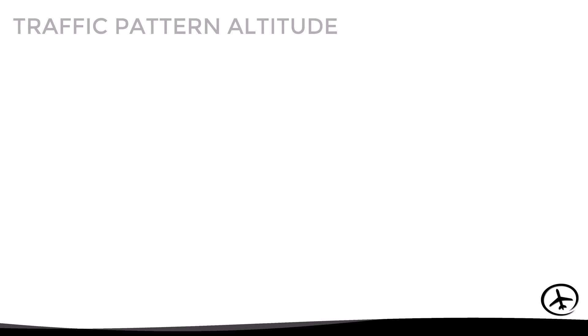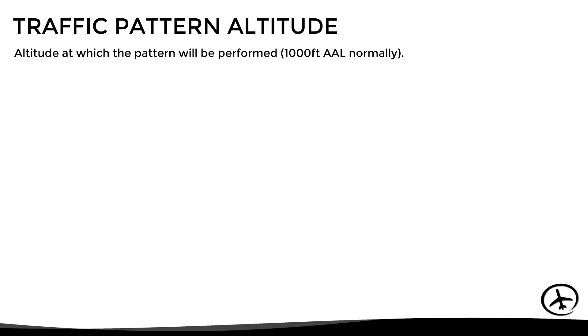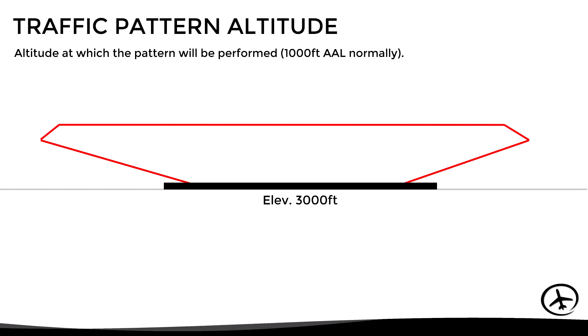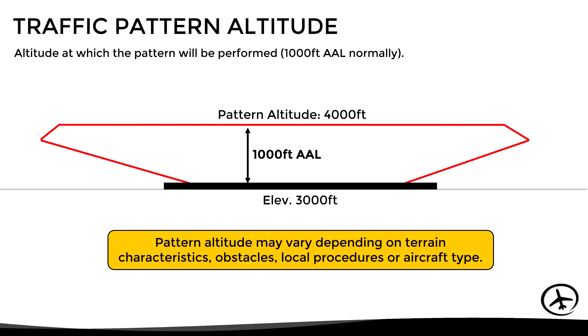Before going to the base leg, let's talk about the pattern altitude. This is the altitude at which the pattern will be performed and, as already mentioned, it is normally 1,000 feet above the airport level. For example, if the airport elevation is 3,000 feet then the pattern altitude would be 4,000 feet. However, this may vary depending on terrain characteristics, obstacles, local procedures, or aircraft type.